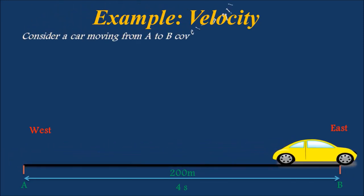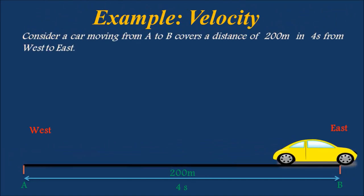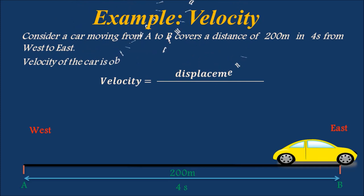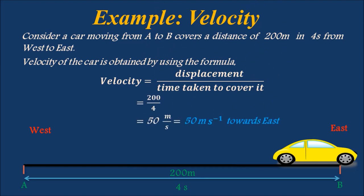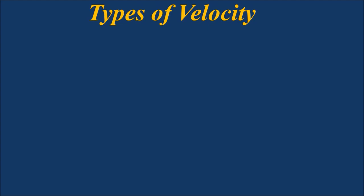Consider a car moving from A to B, covering a distance of 200 meters in 4 seconds from west to east. Velocity is obtained using the formula: displacement divided by time taken. That equals 200 divided by 4, so velocity is 50 meters per second towards east. The various types of velocity are: uniform velocity, variable velocity, average velocity, and instantaneous velocity.